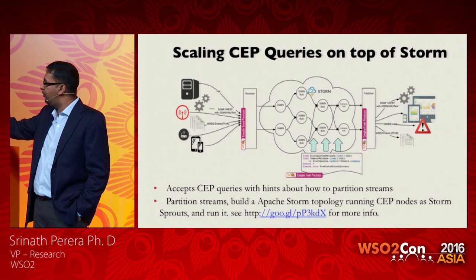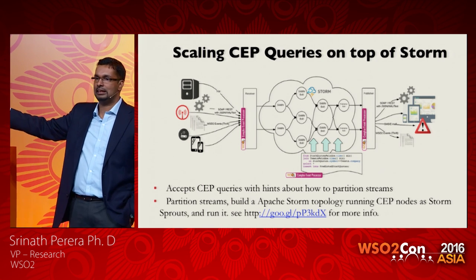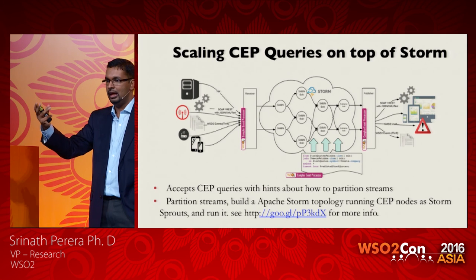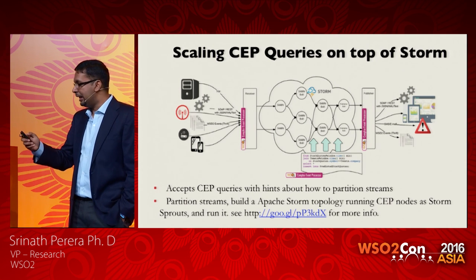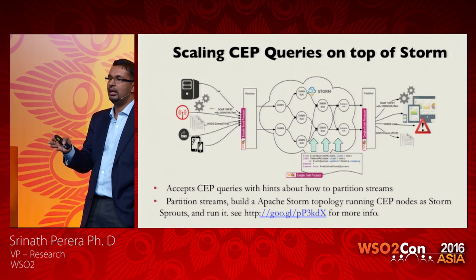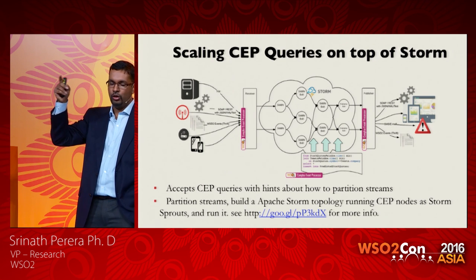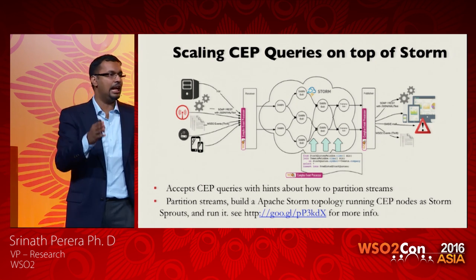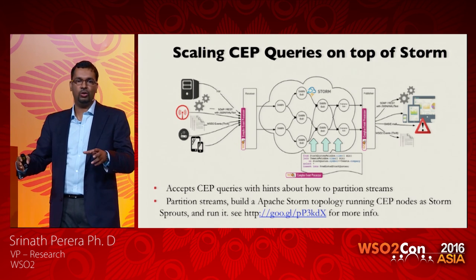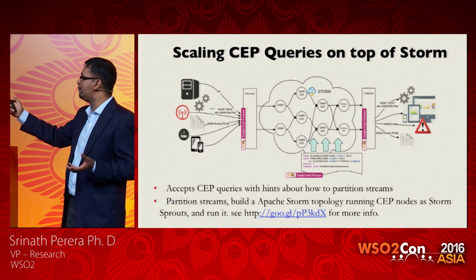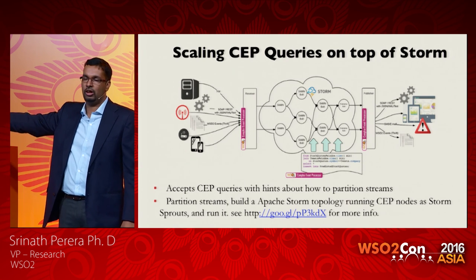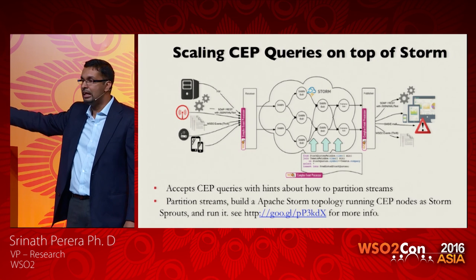If you want to scale, by default we can run CEP as a single main server with active-passive failover. But when you need to scale, we can run it on top of Apache Storm. You write the same SQL-like query, turn on a flag, and annotate the query with how to partition the data so we can run it in parallel. We automatically convert that into multiple CEP engines running on top of Apache Storm.